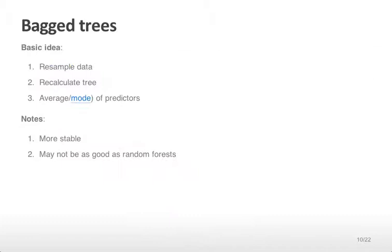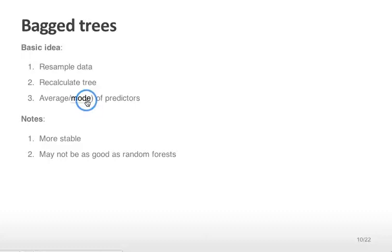In addition to using bagging for nonlinear smooth functions like LOESS, we can bag regression trees or classification trees. What we typically do is resample the data, recalculate trees, and then either take the average or the mode of the predictors — the mode being the most common value assigned to a particular sample. Bagged trees are more stable, but might not be as good as random forests, which we'll discuss shortly.